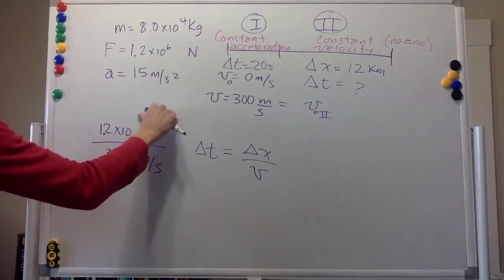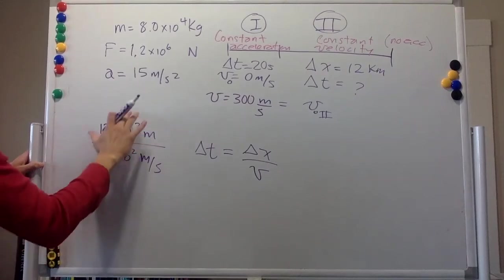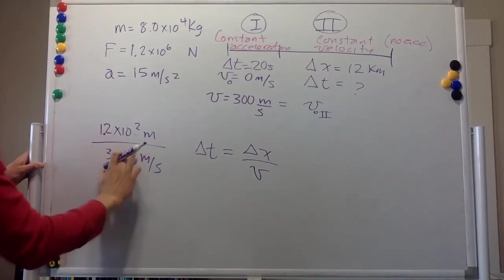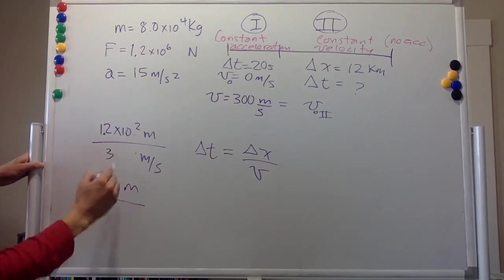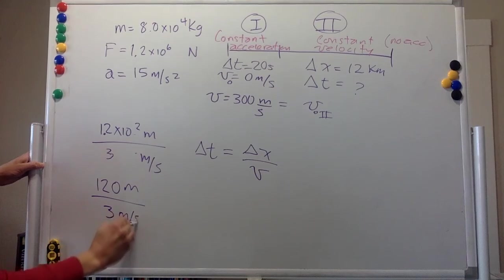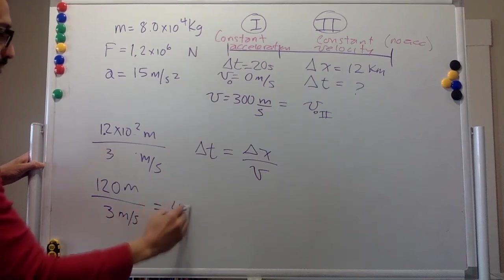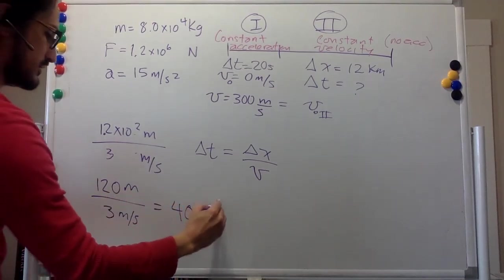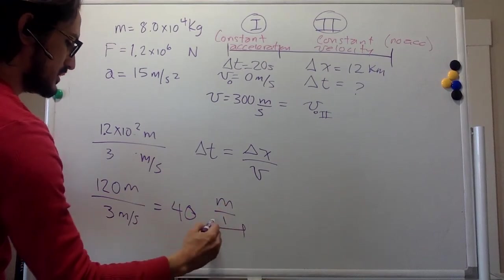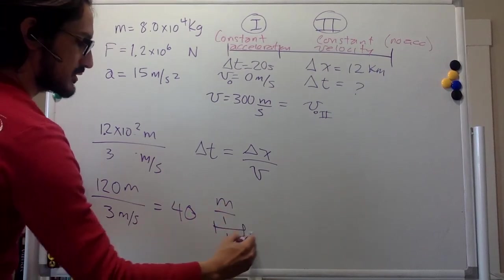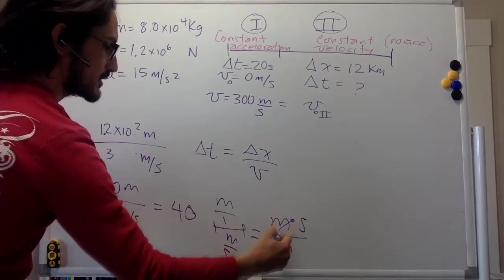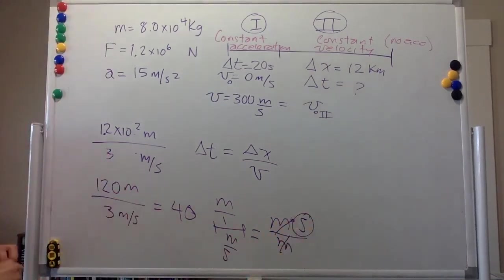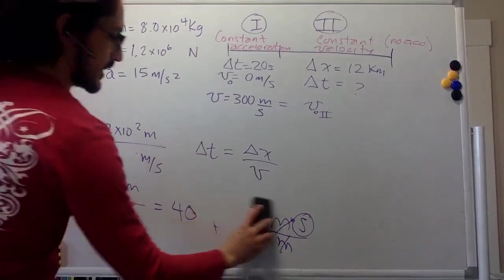And we divide it by 3 times 10 to the 2 meters per second. So we can get rid of this one, it's going to be a 2, and subtracting this one is going to be just 3. So 1.2 times 10 to the 2, that's 120 meters, divided by 3 meters per second, is going to be 40. And the units we have meters and meters per second, so this is meter times second divided by meters. We get rid of the meters and we end up with just the seconds. So this is 40 seconds.